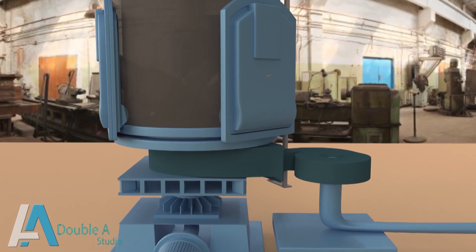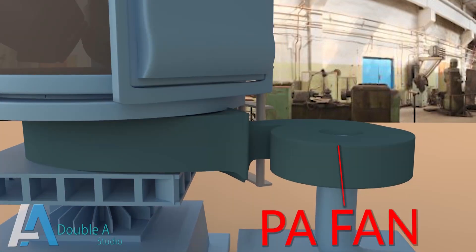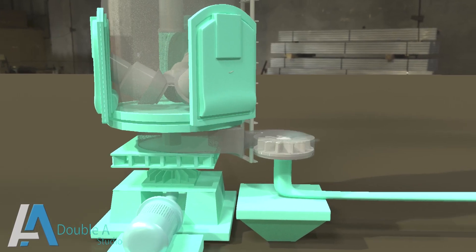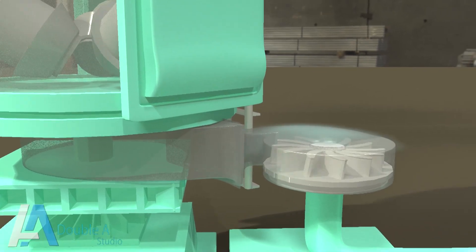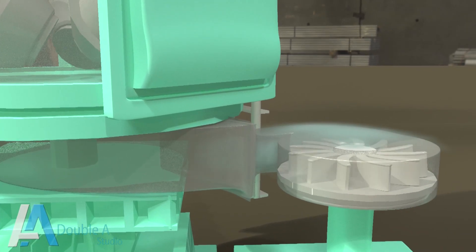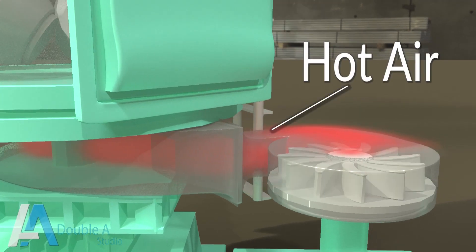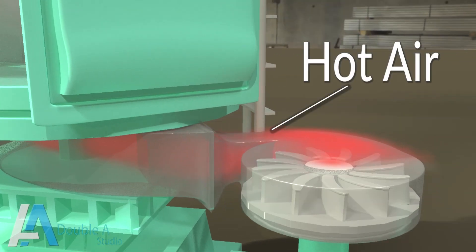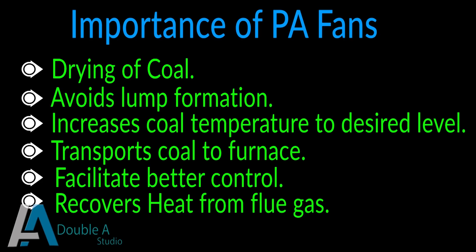We can see the PA fan — that is the primary air fan — at the bottom of the mill. These are high pressure fans and supply hot air through the air preheater. This hot air helps in drying of coal, which helps in removing stickiness and lump formation. This is very important; otherwise coal lumps and heat due to friction may cause fire in coal mills.